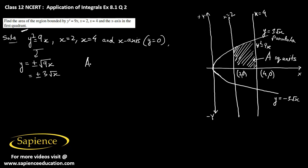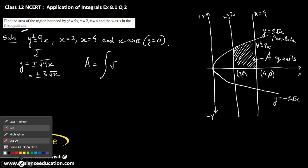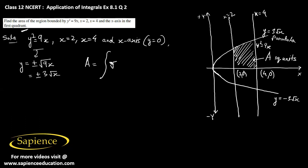A will be the integral of 3 root x dx with limits from 2 to 4. Since 3 is a constant, we can take it outside the integral: 3 times the integral from 2 to 4 of root x dx.